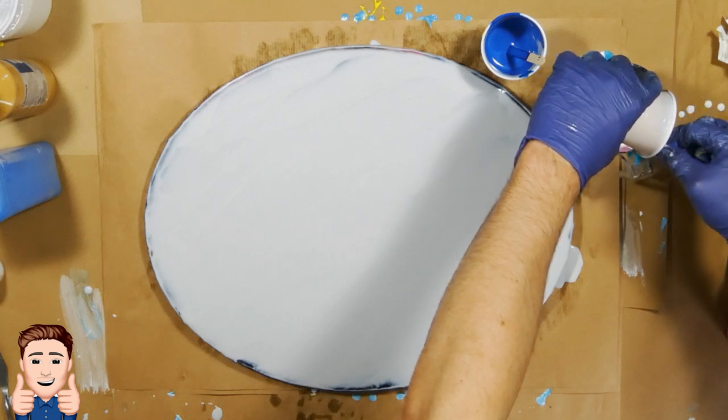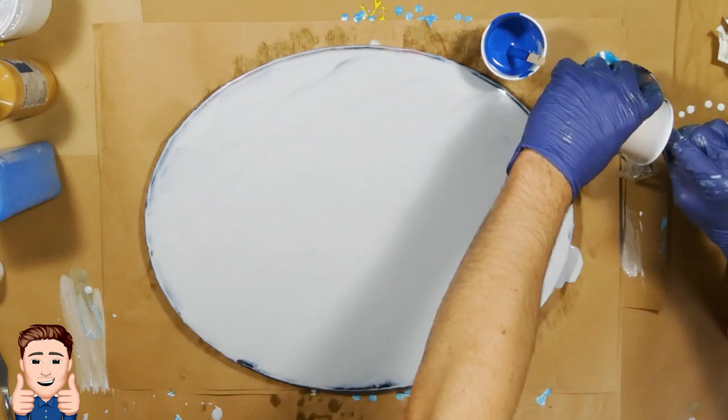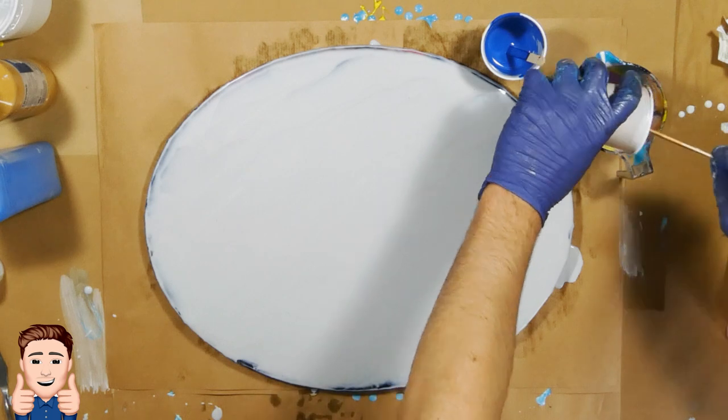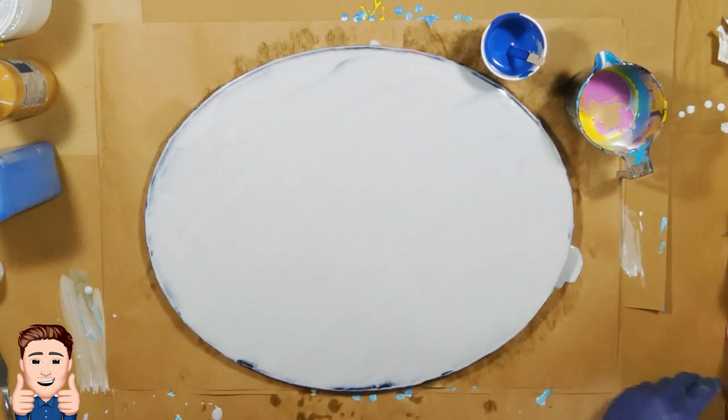He is going to use a measuring jar to pour everything onto the canvas, and there is silicone in each of these paints. Patrick wanted to have some cells.